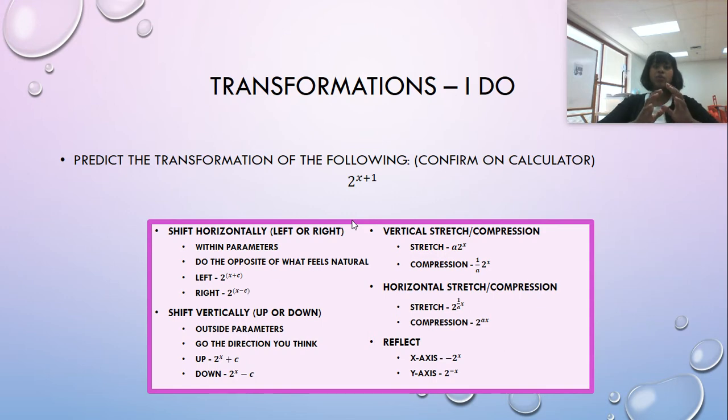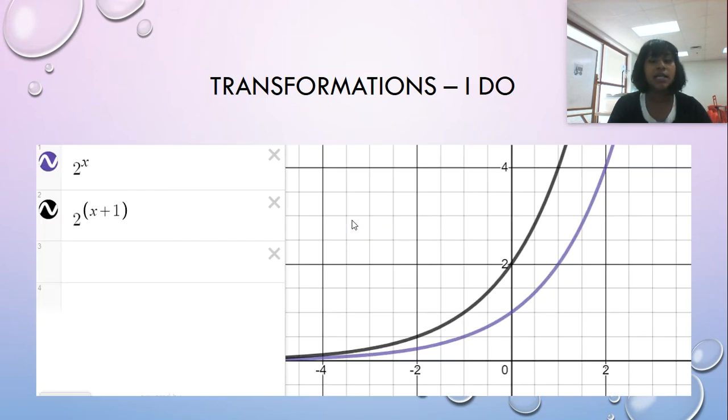If it's attached to the variable, it's horizontal. If it was outside of the variable, a.k.a. 2^x and then plus one, then it would be an up and down. And I think you'll kind of recall that yourselves. So because I'm within parameters, I'm really close to that variable, I'm going to do the opposite of what feels natural. And so I'm actually not going to plus one move to the right. I'm actually moving to the left by one. But let's confirm this here. I have a graph in purple is the original. And here I can see I shifted to the left by one. Ta-da!